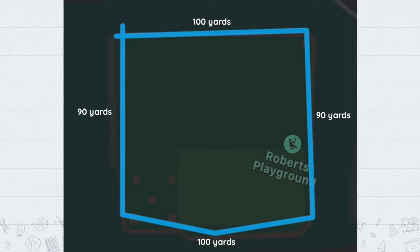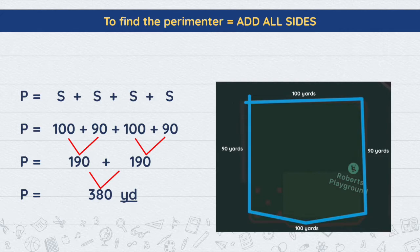We know that to find the perimeter, all I have to do is add all sides. I love a good formula and always like to have a little structure to follow. So I like to write: perimeter equals side plus side plus side plus side. I write the letter S four times to remind my brain that I have to have four numbers. So perimeter equals 100 plus 90 plus 100 plus 90. I know that 100 plus 90 equals 190, and 190 plus 190 equals 380. The perimeter is 380 yards — that's how much Oscar and I run.